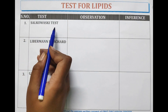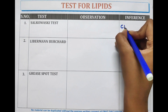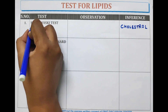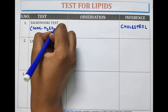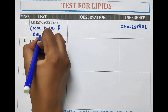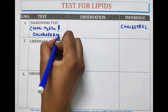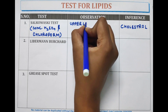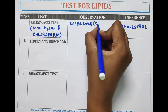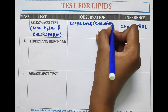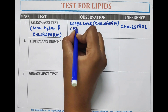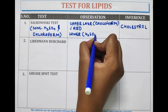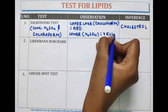The first test is the Salkowski test. It is the test for identification of cholesterol. In this, concentrated H₂SO₄ and chloroform are used. If the sample contains cholesterol, then the upper layer containing chloroform will change its color to red, and the lower layer containing H₂SO₄ changes its color to yellow. This indicates that the sample contains cholesterol.